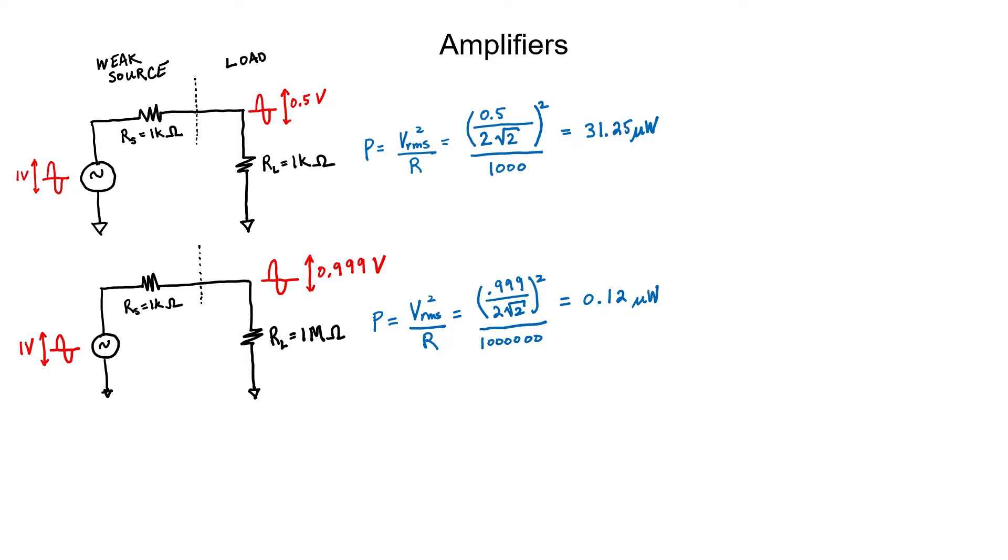This is interesting because in the first case, the load resistor was smaller. The smaller resistor ended up with more power. However, in the second case, the voltage was higher. The situation with the higher voltage actually resulted in lower power. This brings us to an important conclusion. You cannot judge from the size of a resistor or from the size of the voltage appearing across the resistor alone, how much power is going to be delivered.